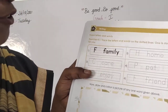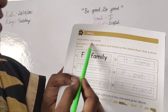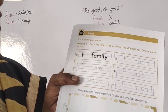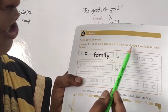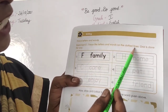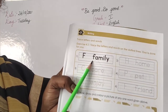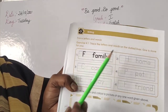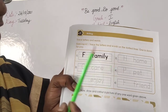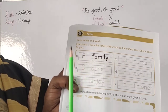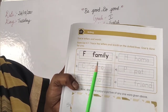Now for writing: trace the letters and words on the dotted lines. One is already done for you — these others you have to trace as well. Trace it now, children.